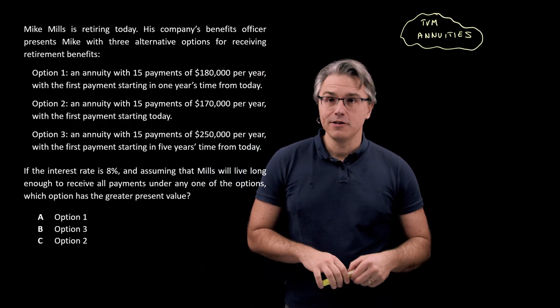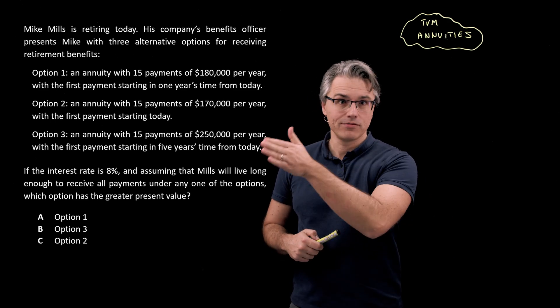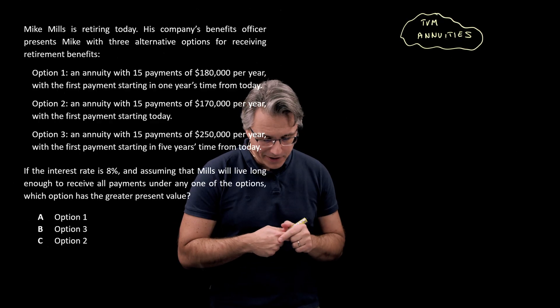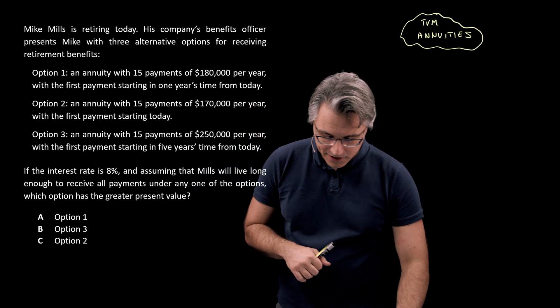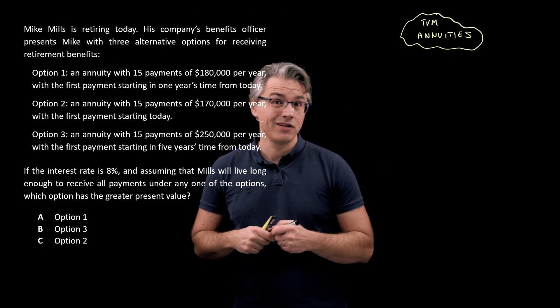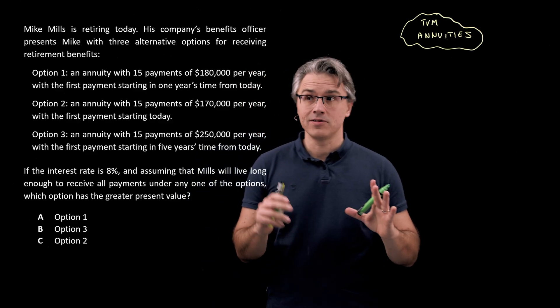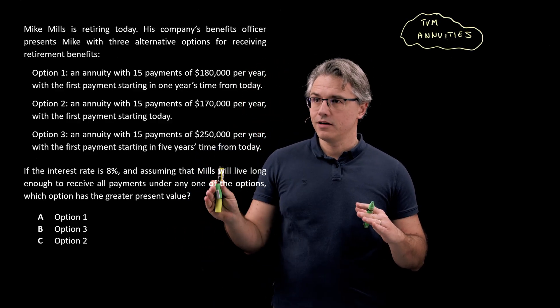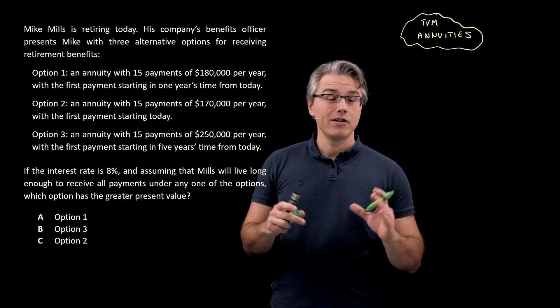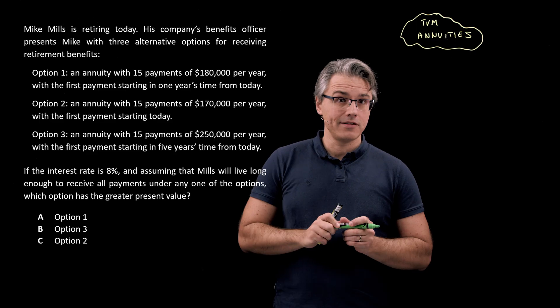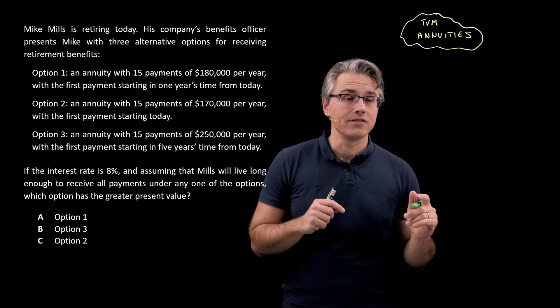We're dealing with annuities here, so that's a finite set of sequential level payments, payments of an equal amount. And I'm going to write out what you will need to do on the time value of money worksheet in your calculators, on your Texas Instruments calculators to solve these. We'll be solving for present values, so it's just a case of properly inputting these onto your calculator.